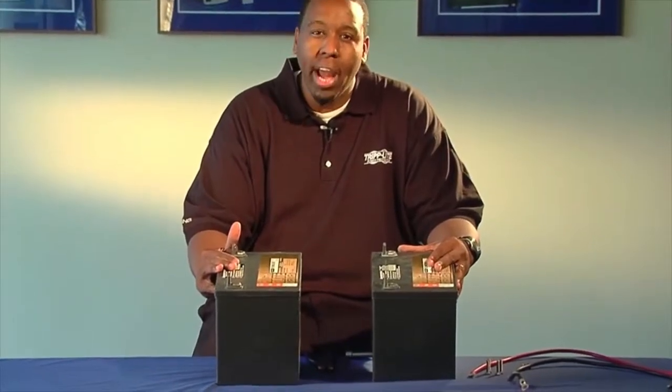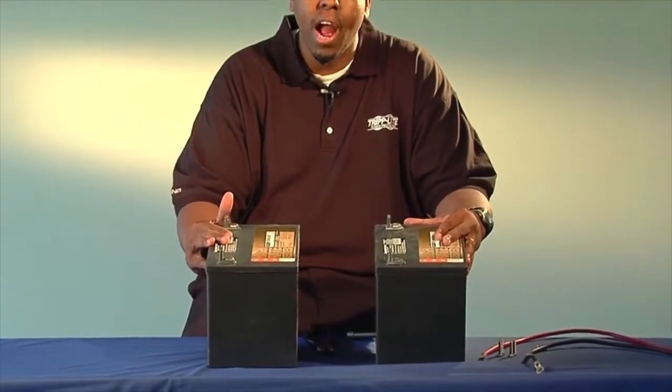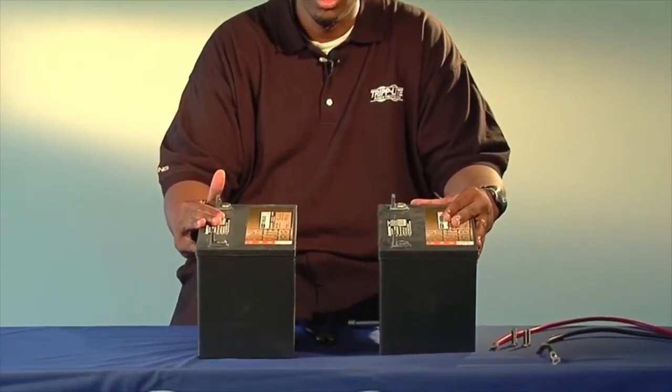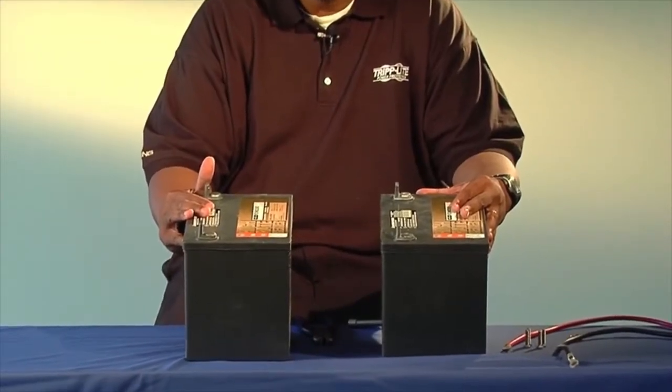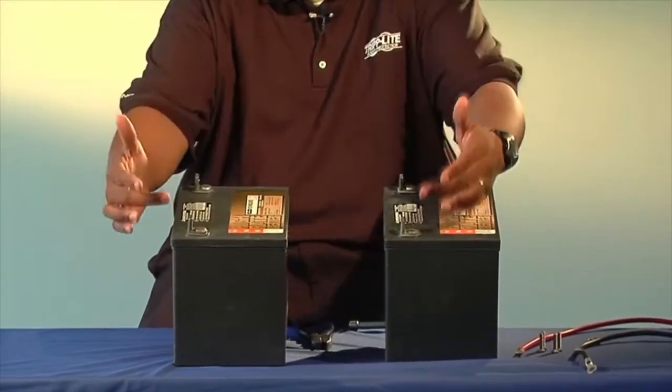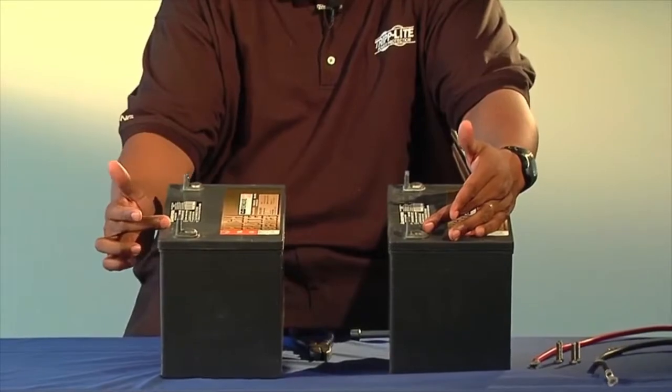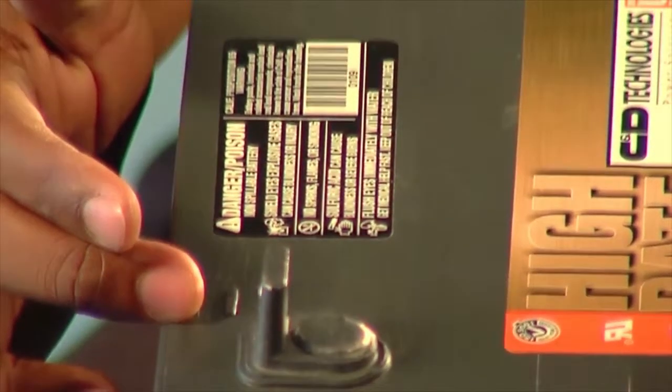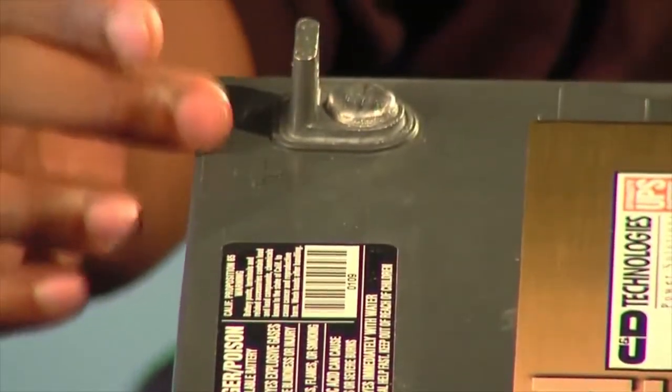Today we'll be using two 12-volt batteries at 75 ampere hours per battery. Your battery terminals are marked with symbols. Here we have the negative terminals, which are marked by a minus sign. And we also have the positive terminals, which are marked by a plus sign.